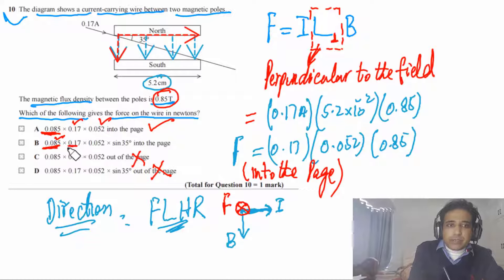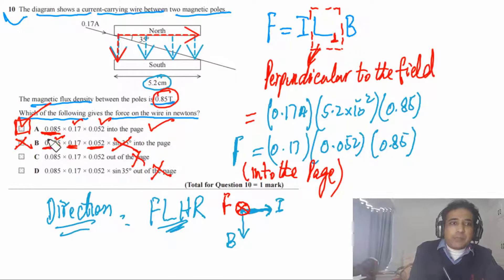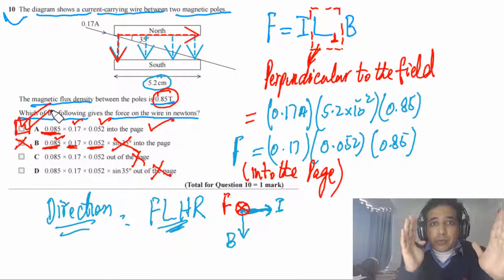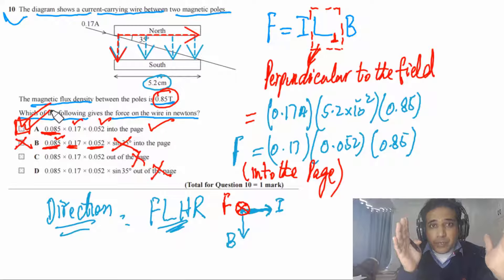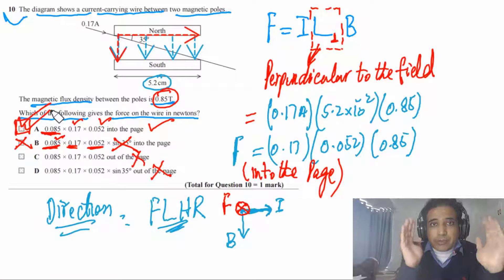The correct answer uses 0.052 for only the perpendicular component of the wire, and 0.85 for B — the other option with 0.085 is just a typo. So the answer is A. If this video is helpful, please like and subscribe, leave comments, and join Patreon for extra resources.